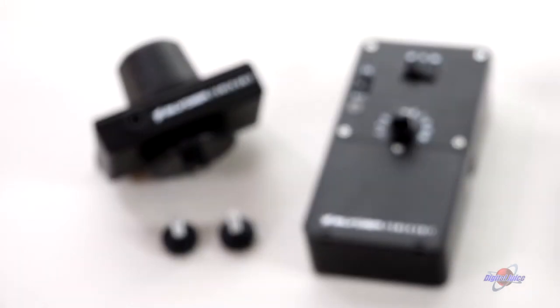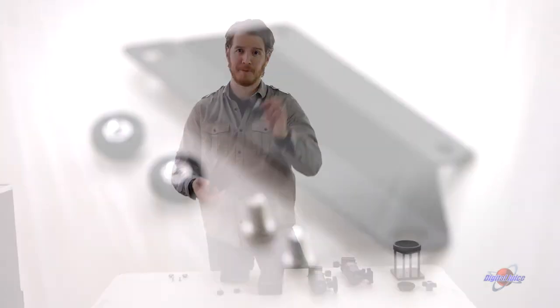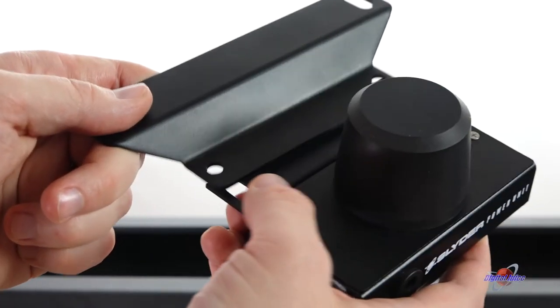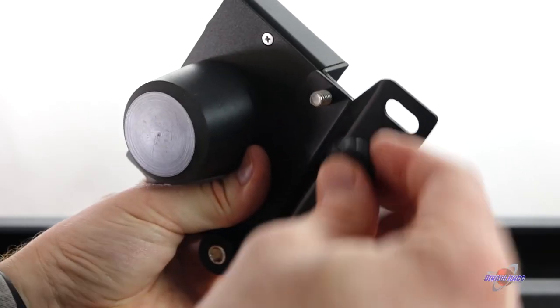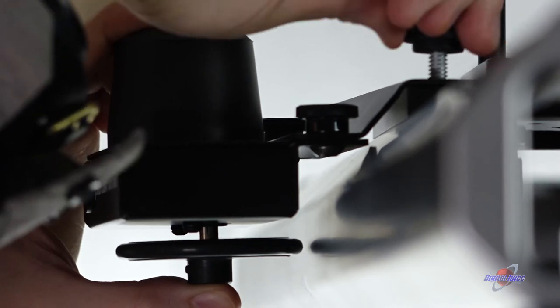Now last up is the slider power unit. Because let's face it, you can get a pretty smooth shot moving the slider by hand. But you'll be able to get a smoother, more consistent shot with a motor. Now your master slider comes with an adapter. This allows you to connect the slider power unit directly to your master slider. So using the adapter plate, along with the nuts and bolts included, slap this onto the slider and you're in business.